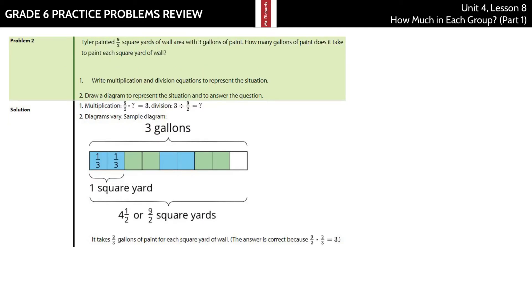As we continue on to the next question, Tyler painted nine-halves square yards of wall area with three gallons of paint. How many gallons of paint does it take to paint each square yard of wall? Write a multiplication and division equation to represent the situation, and draw a diagram to represent the situation and answer the question.